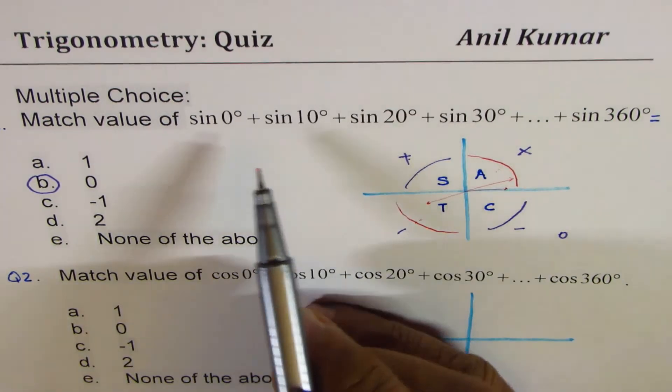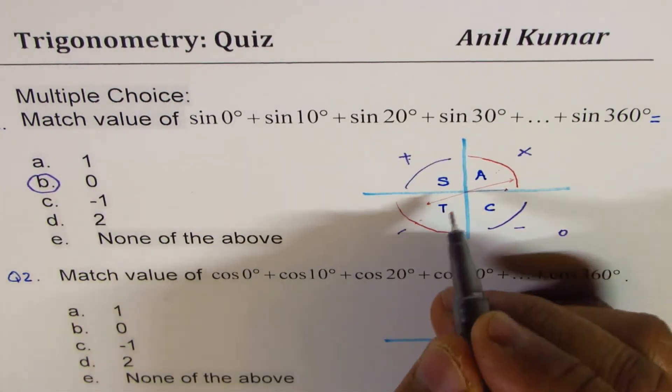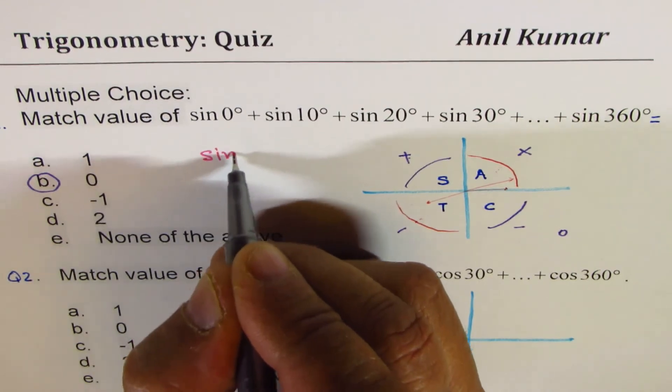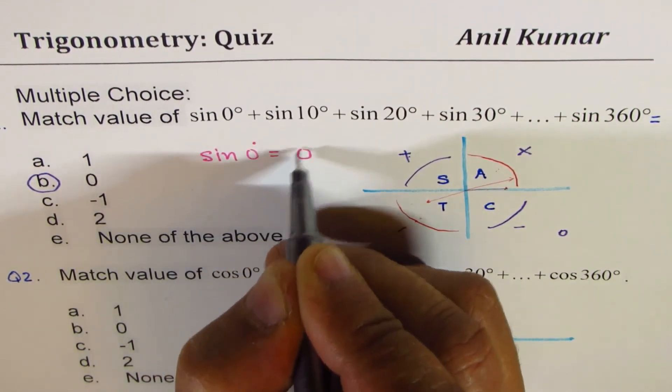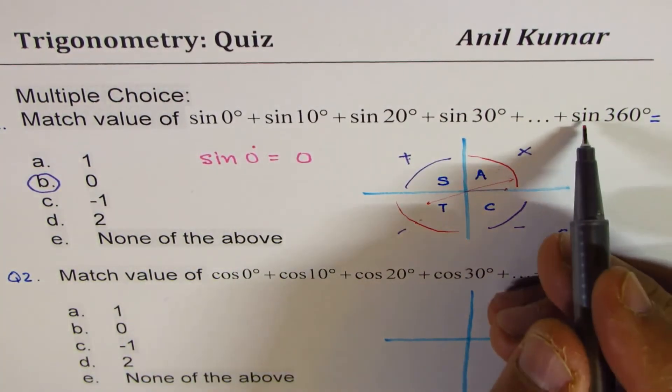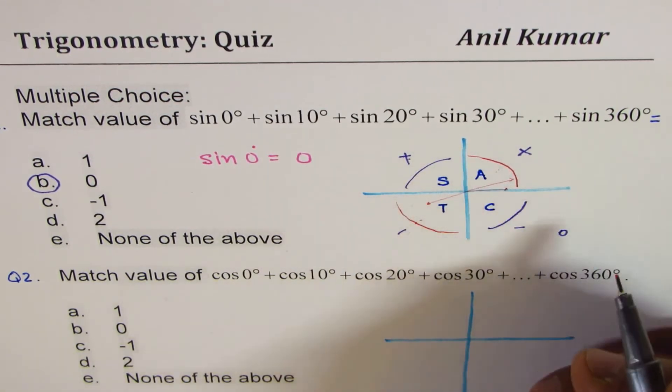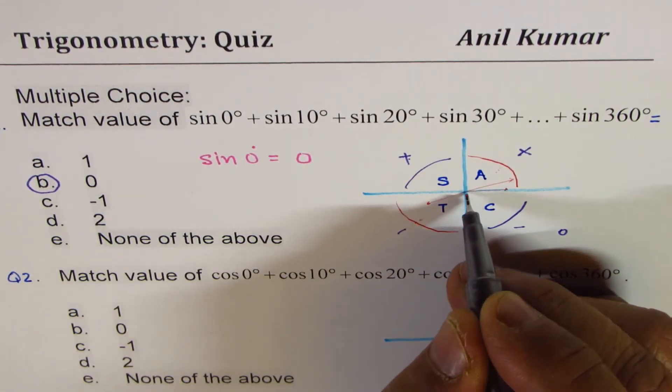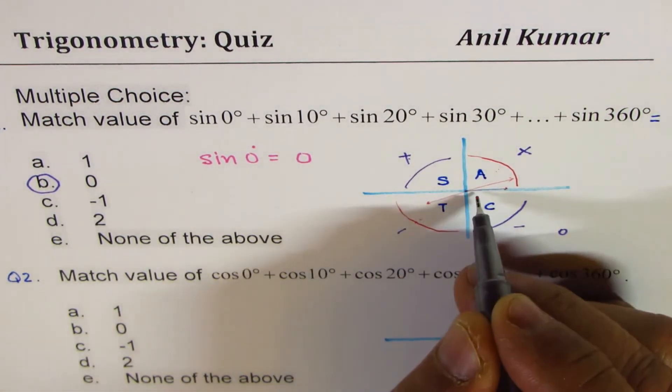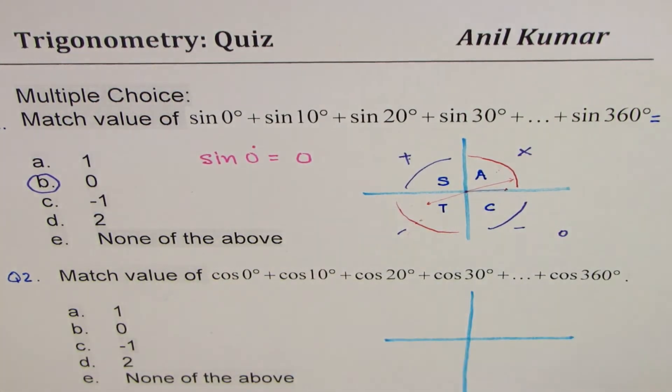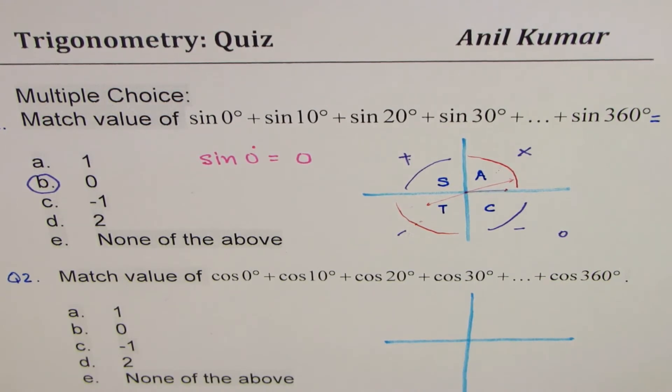It is also important to note that sine 0 is what? Sine 0 degrees is 0, right? Sine 360 is 0. Now, so it was 0 here. For this also, it was 0. Now, let's look into question number 2. What should be the answer? Think about it. So these two scenarios are a bit different.